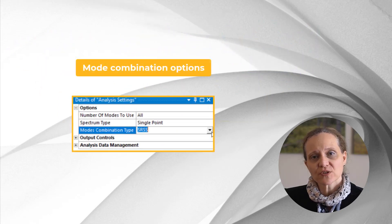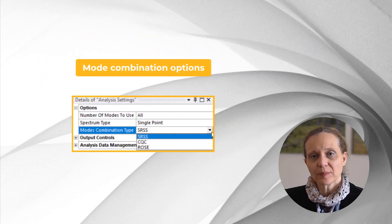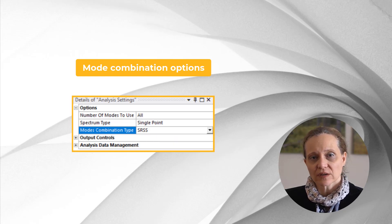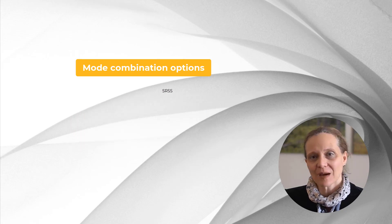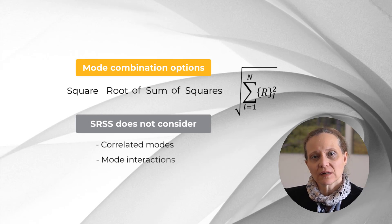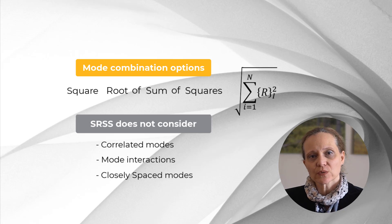There are different options that can account for damping or the effect of closely spaced modes interacting with each other. The default combination method takes the square root of sum of squares. This is uncorrelated, not accounting for mode interaction or the effect of closely spaced modes.